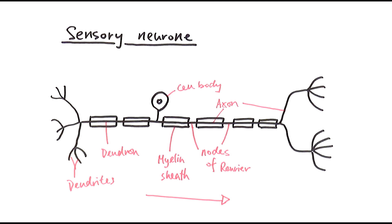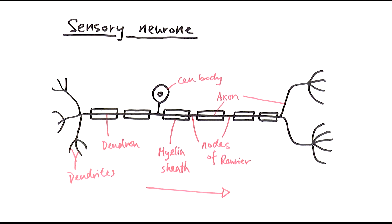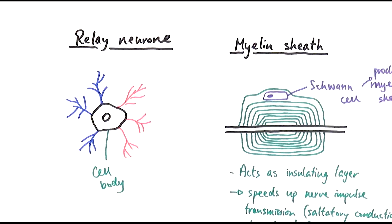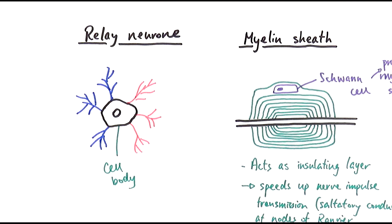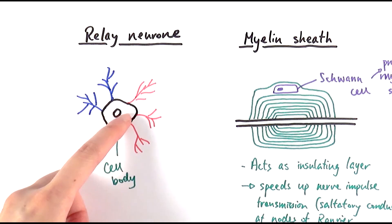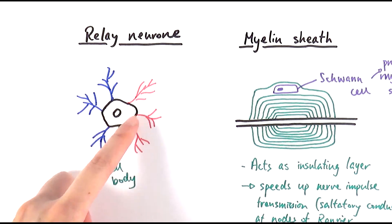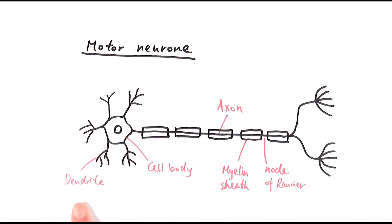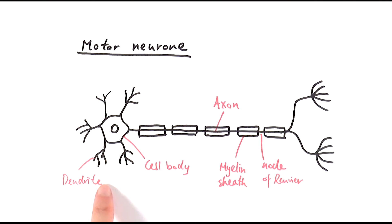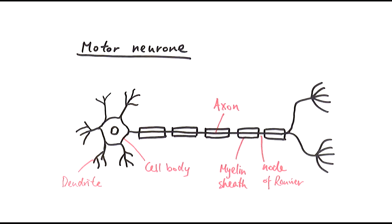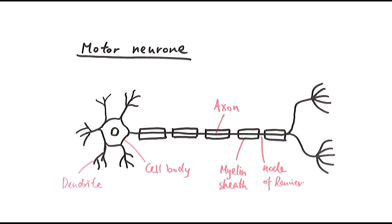To recap the different neuron types: the sensory neuron has dendrites and a dendron, with the cell body in the middle, transmitting the signal along the axon. The signal then reaches the relay neuron — the blue branches are dendrites receiving the signal from the sensory neuron, passing to the cell body, then relayed through the axons to the motor neuron. In the motor neuron, dendrites receive the signal, pass it to the cell body, and then through the axon to the effectors — either muscles or glands depending on the response.